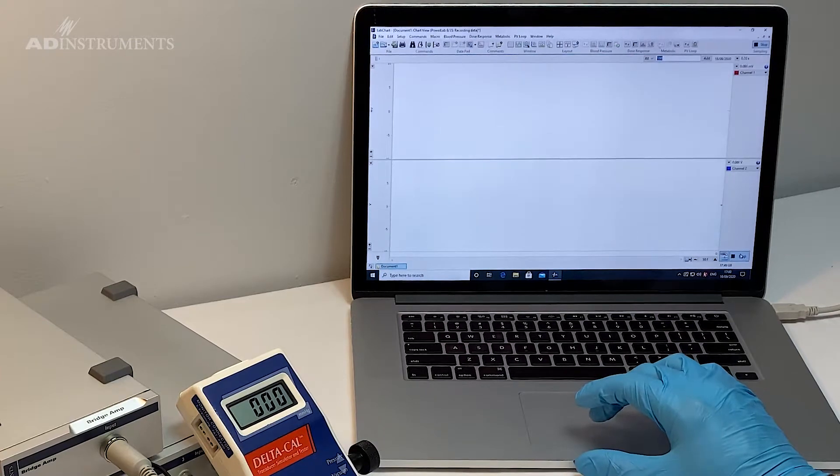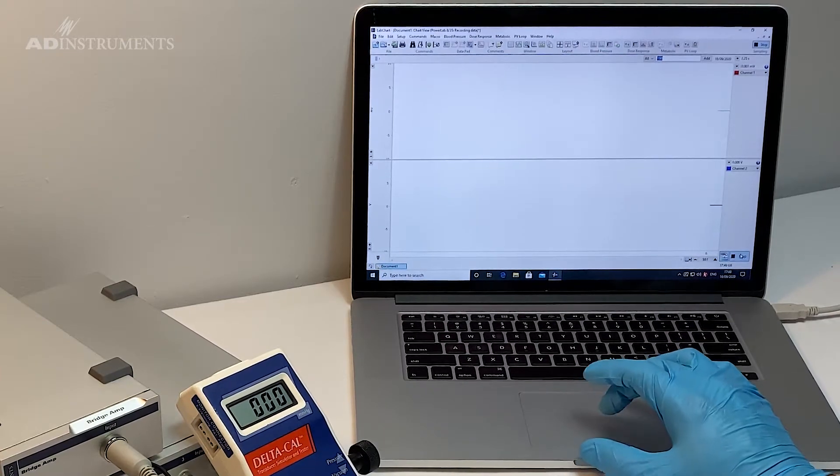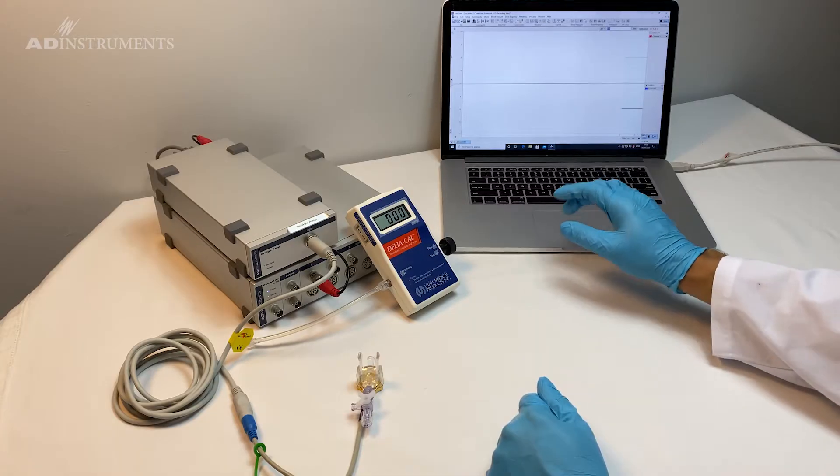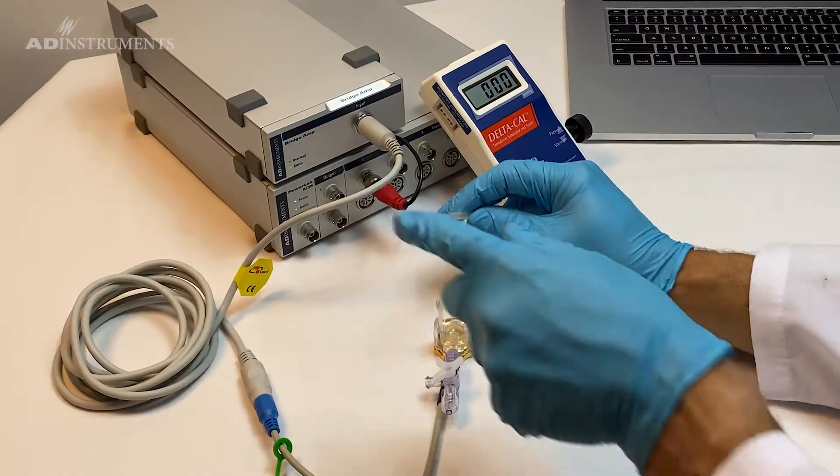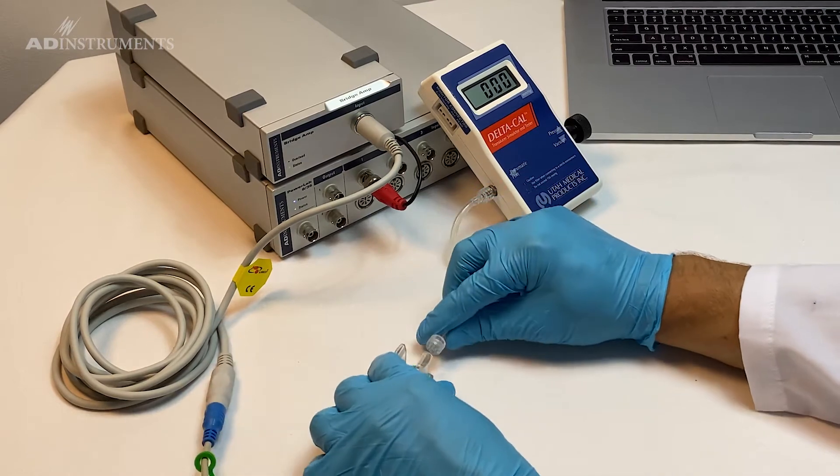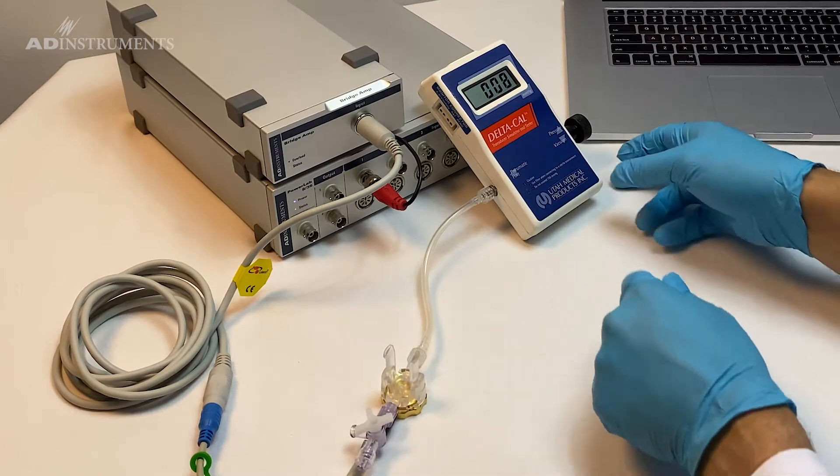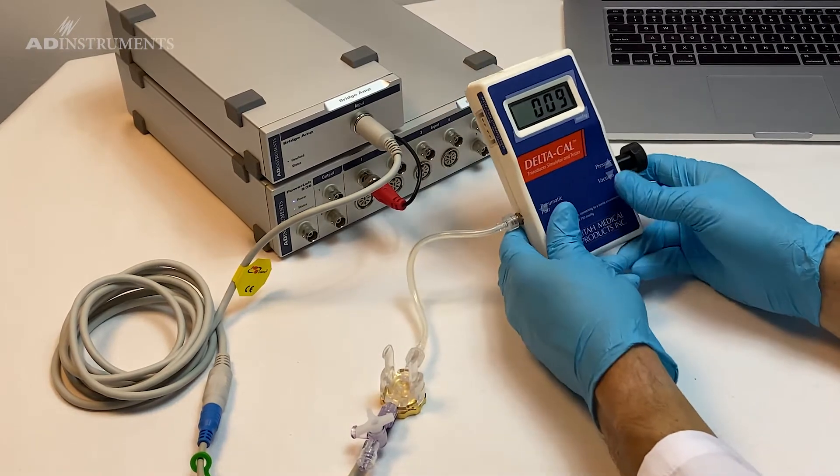Once that is done I can click OK and I will start recording. That should be my zero level at zero millimeters of mercury. Now I can attach the Delta Cal to the other end of the transducer, and you'll see that the pressure has gone up.